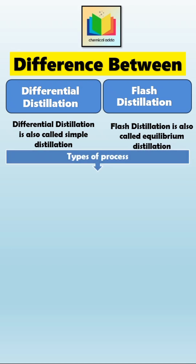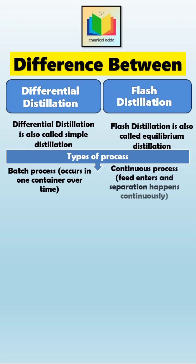First, based on the type of process: differential distillation is a batch process that occurs in one container over time, but flash distillation is a continuous process where a feed enters and separation happens continuously.